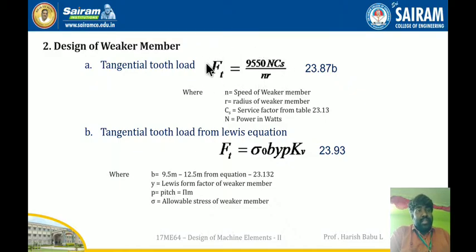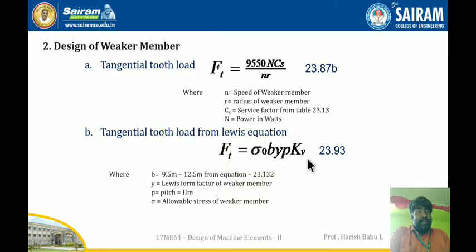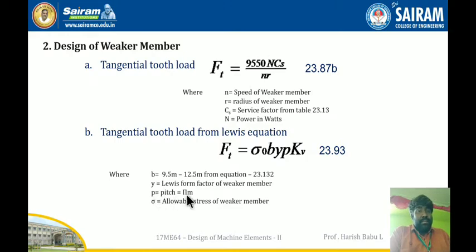The second part uses the Lewis equation: Ft = σ₀ × b × p × y × kv, where kv is the velocity factor. σ₀ is taken from the first step. The face width b is assumed as 9.5m to 12.5m — normally taken as 10m. The equation reference is 23.132. y is the Lewis form factor of the weaker member already calculated, and p is the circular pitch, which equals π × m. Substituting these values gives Ft in terms of m² × kv. Equating this with the first Ft expression gives an equation from which the kv value can be calculated.